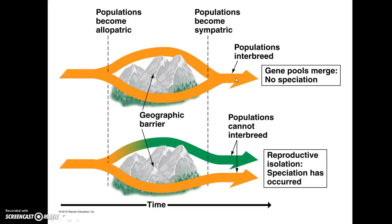If the populations can actually interbreed and produce viable offspring, we have a merging of their splinter population gene pools, and no speciation has actually occurred. So they were separate for a period of time, but when that geographic barrier was removed, they could still interbreed — which means that they're not separate species.